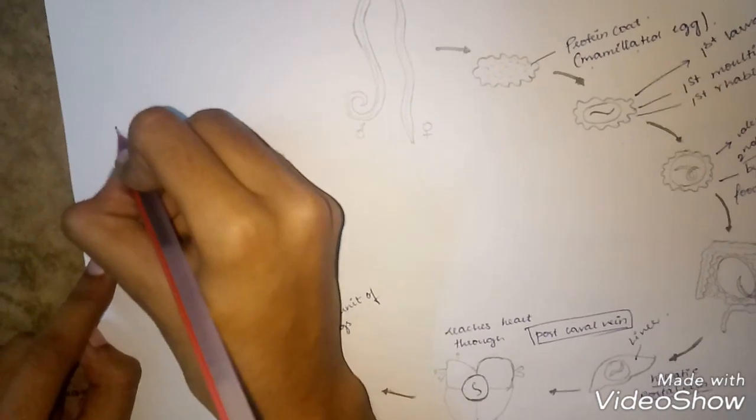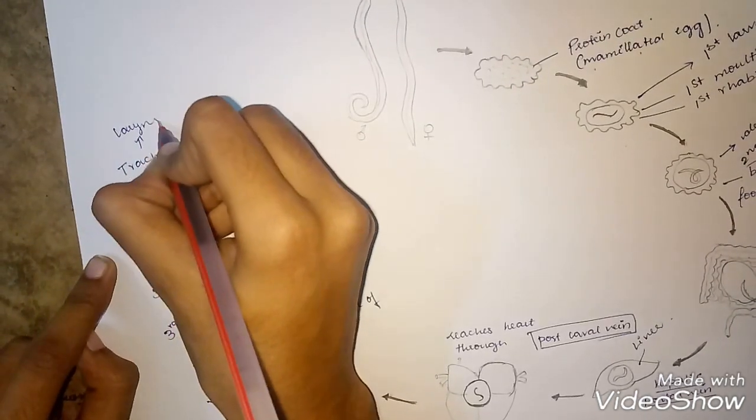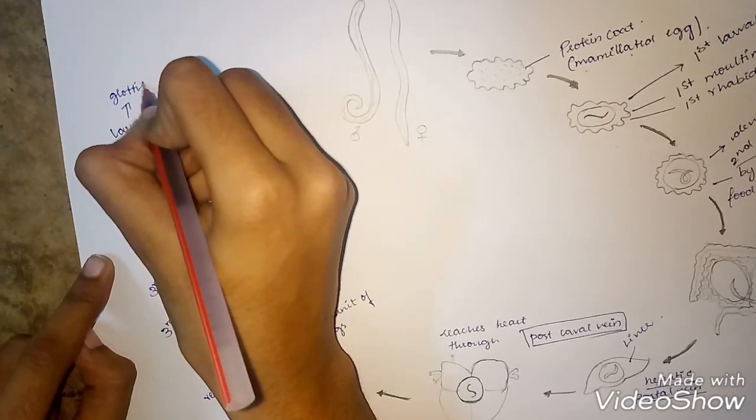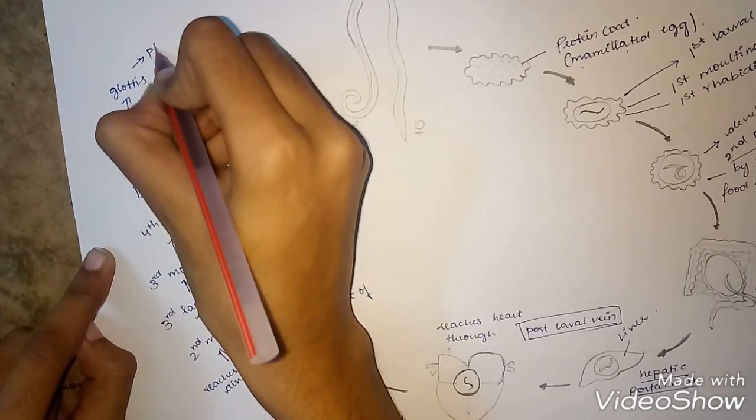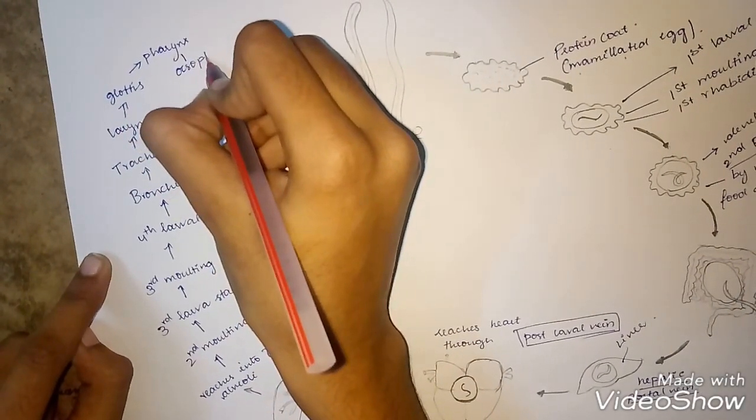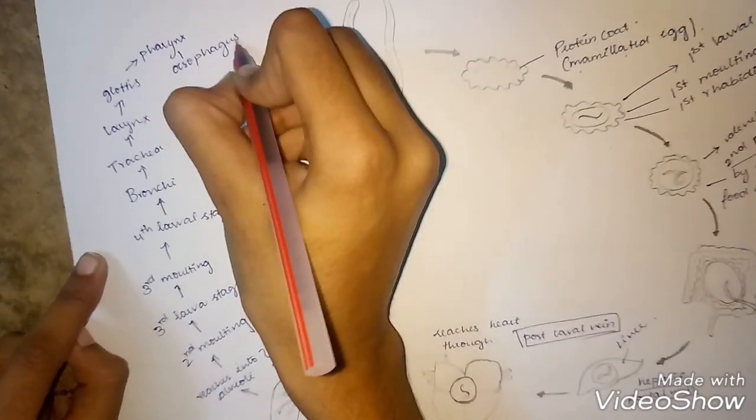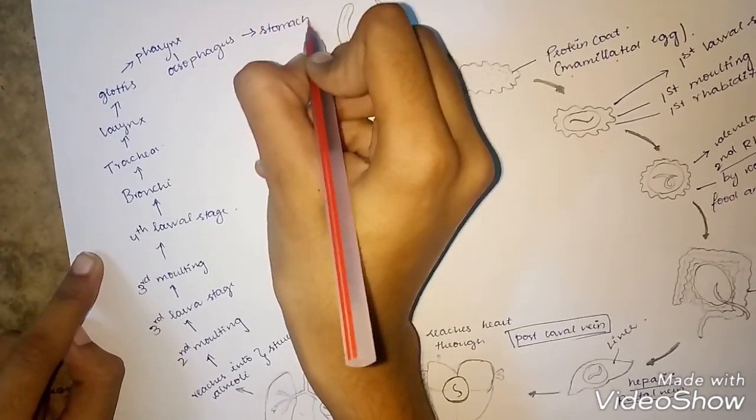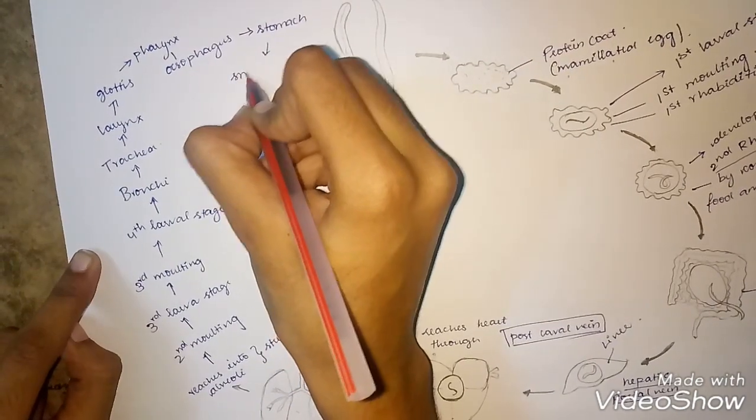The larvae move through the larynx, glottis, pharynx, esophagus, and into the stomach. From the stomach, they go into the small intestine.